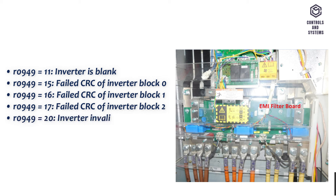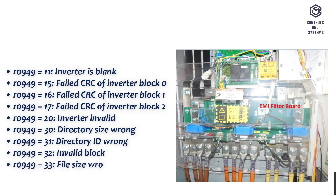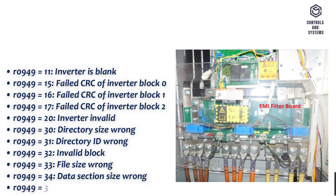R0949 equals 20: inverter invalid. R0949 equals 30: directory size wrong. R0949 equals 31: directory ID wrong. R0949 equals 32: invalid block. R0949 equals 33: file size wrong. R0949 equals 34: data section size wrong. R0949 equals 35: block section size wrong.